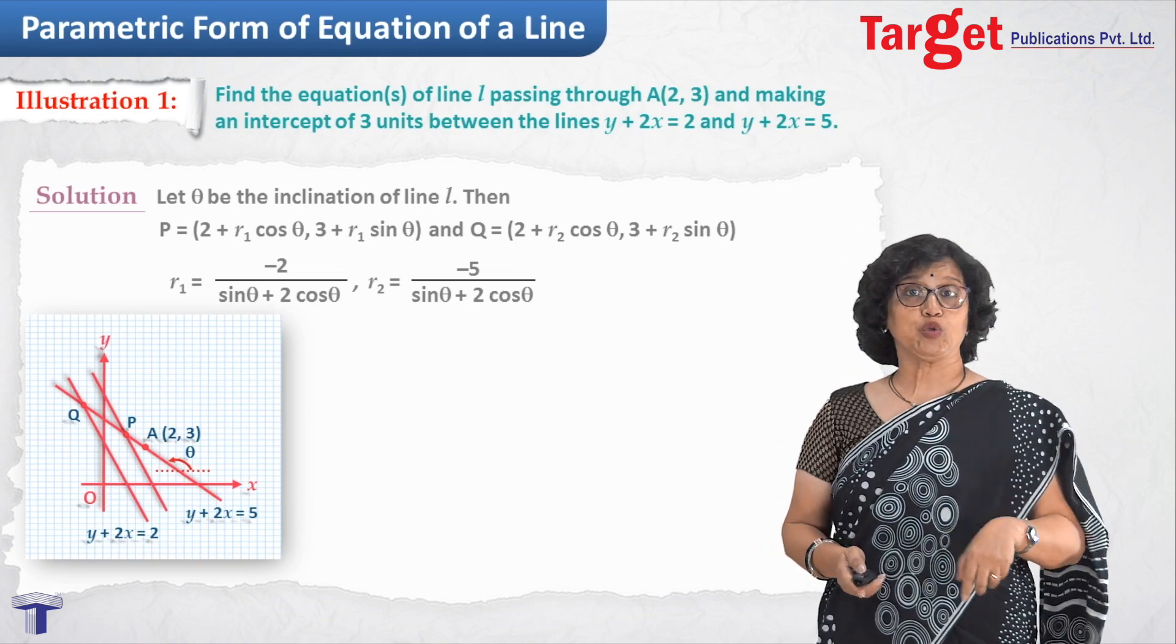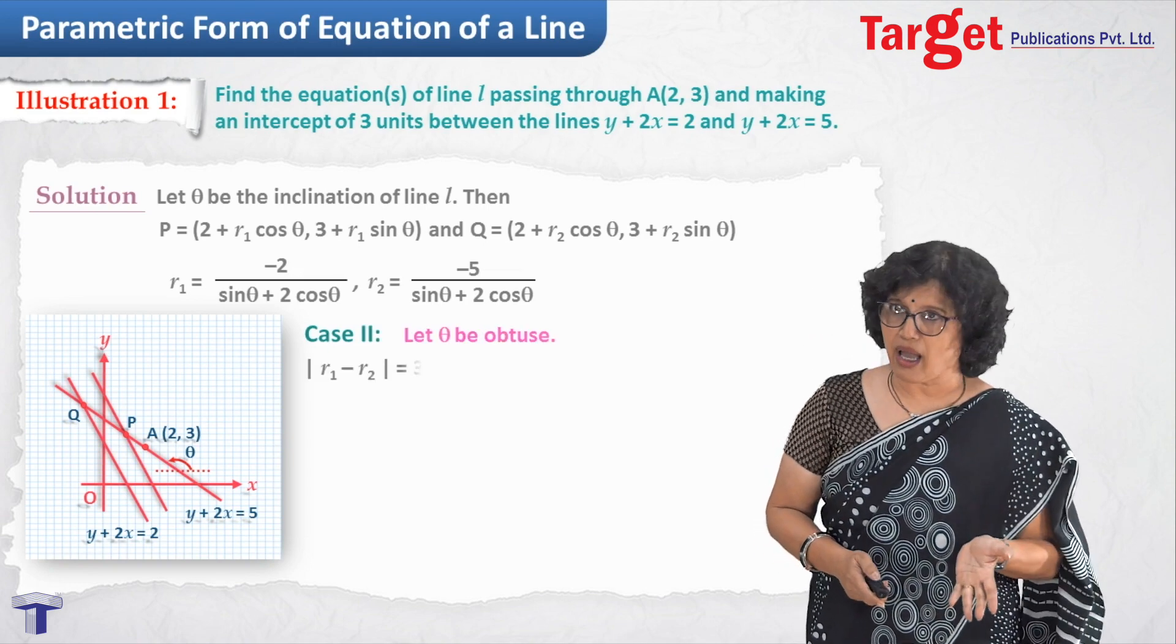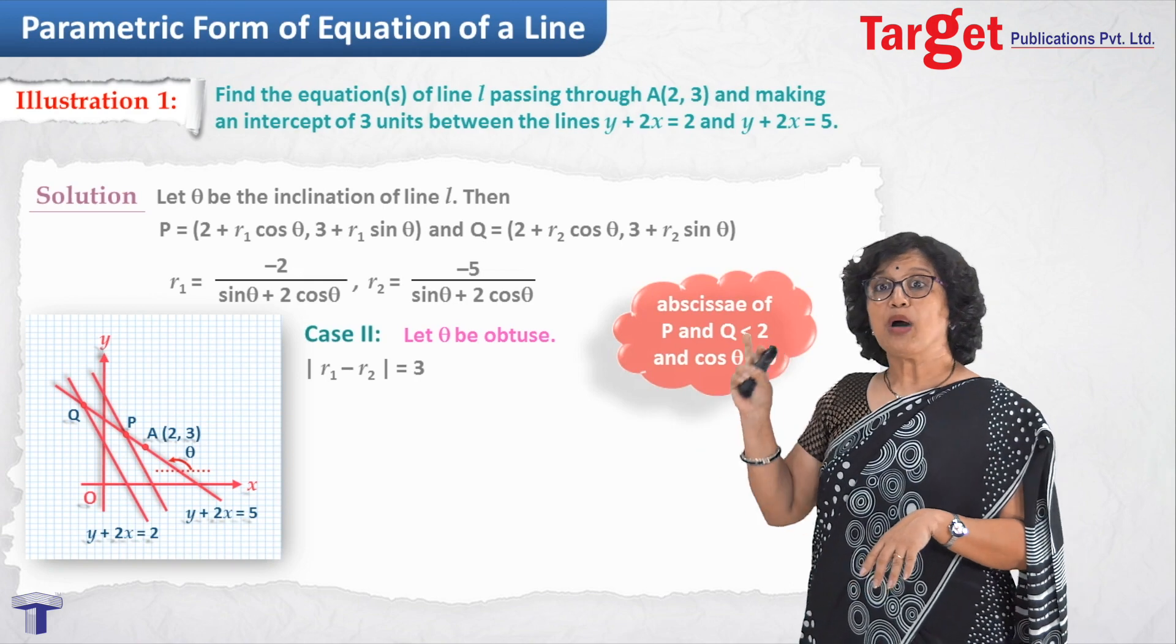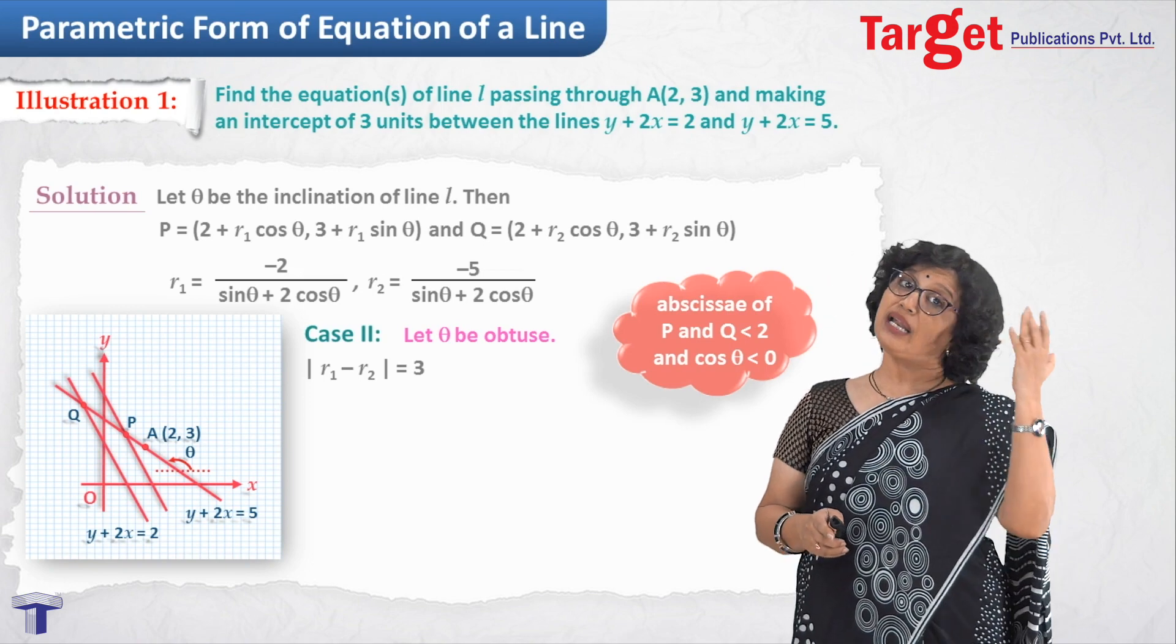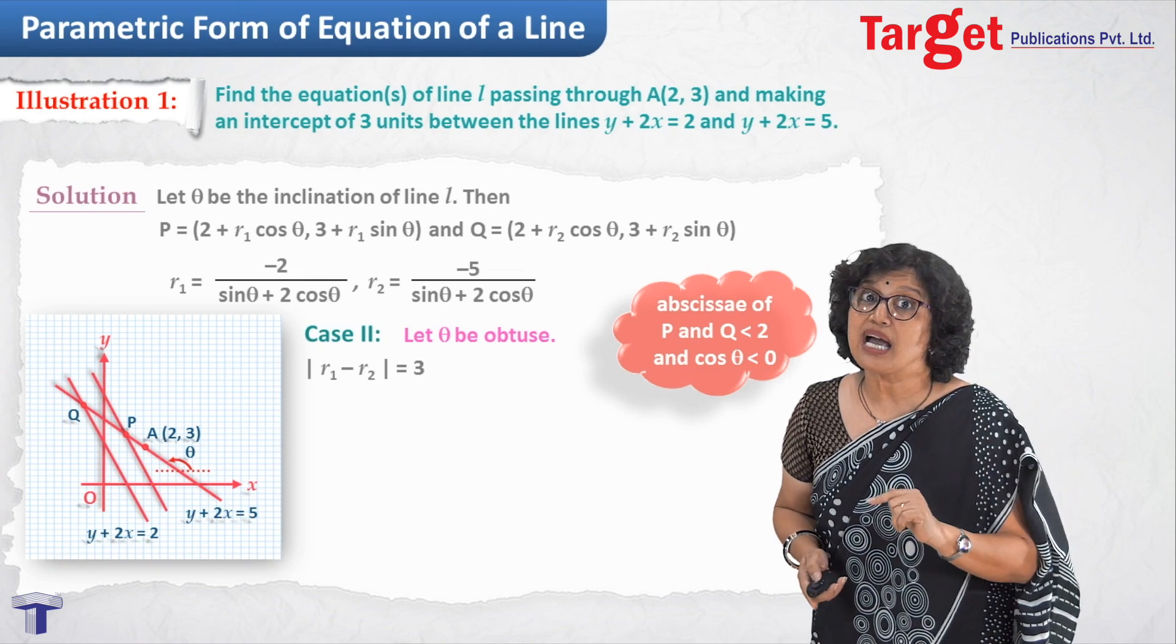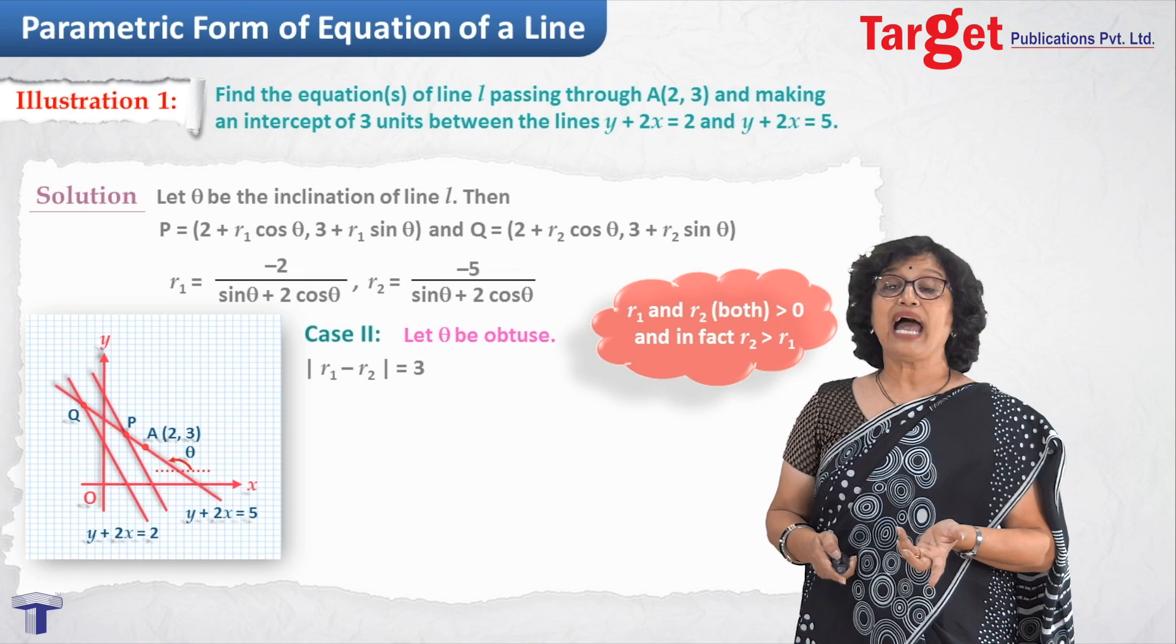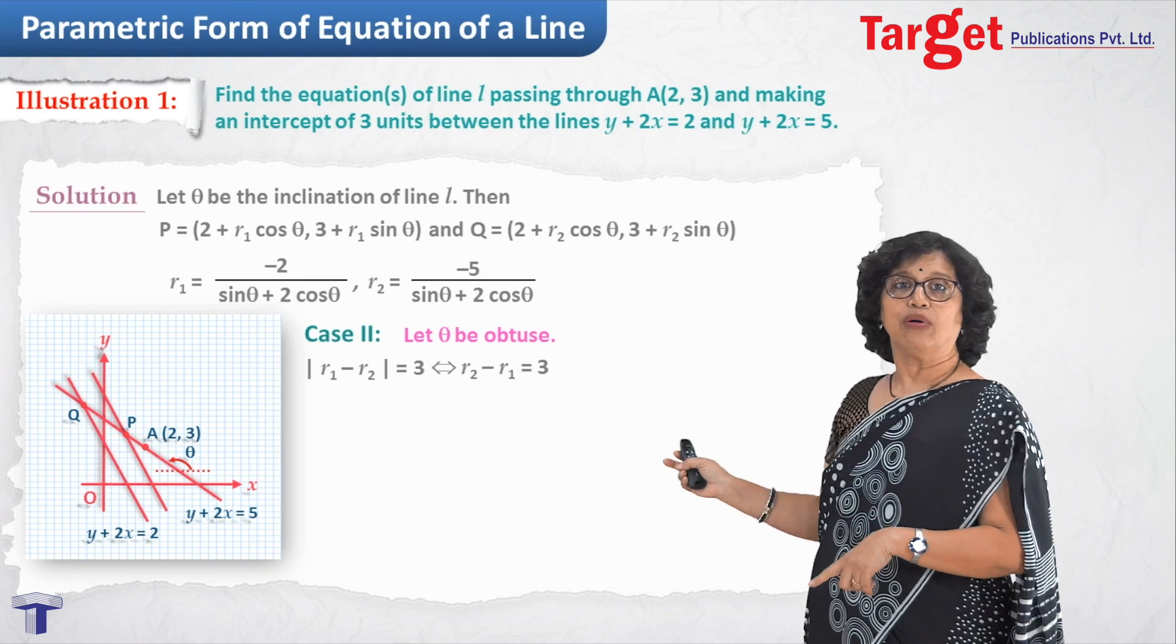Then picture would be something like this. And again, I will have to start from fresh. Theta be obtuse. Absolute value of r1 minus r2 is still 3. But I will have to see which is bigger and which is smaller. Now, what is the case now? Now, again, P and Q are on the same side of A. But what about their x coordinates? x coordinates are still smaller than x coordinate of A. But now, cos theta is going to be already negative. So, r1 will have to be positive. And hence, I understand that r2 would be greater than r1 now and absolute value of r1 minus r2 equal to 3 would be replaced by r2 minus r1 equal to 3.